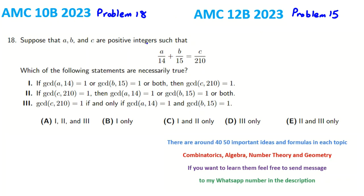It says suppose that A, B, C are positive integers such that A over 14 plus B over 15 equals C over 210. Which of the following statements are necessarily true? When we are working with integers, for example ABC that are positive integers or integers, we don't like denominators.